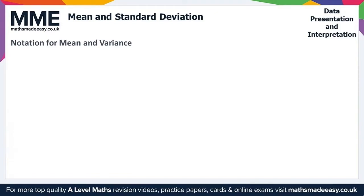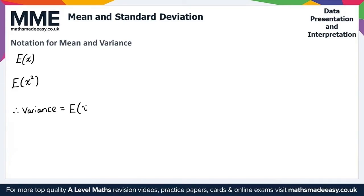Moving on now to notation for mean and variance. The mean can be written as E of X — the expectation, or expected value, of X. It's important to note that the mean of the squares is written as E of X squared. So the variance using this notation can be expressed as the expectation of X squared minus the expectation of X, all squared. That gives us a formula for the variance using this notation.